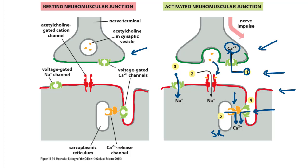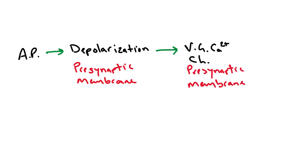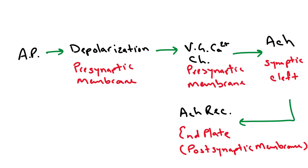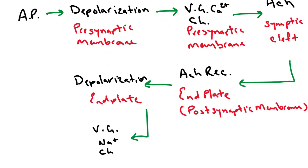The sequence can be written out as follows: an action potential arrives at the presynaptic membrane, causing depolarization, which activates voltage-gated calcium channels on the presynaptic membrane, leading to acetylcholine (ACh) release into the synaptic cleft. ACh activates acetylcholine receptors on the end plate, causing depolarization of the end plate, which activates voltage-gated sodium channels — also on the end plate — acting as a positive feedback loop for further depolarization.